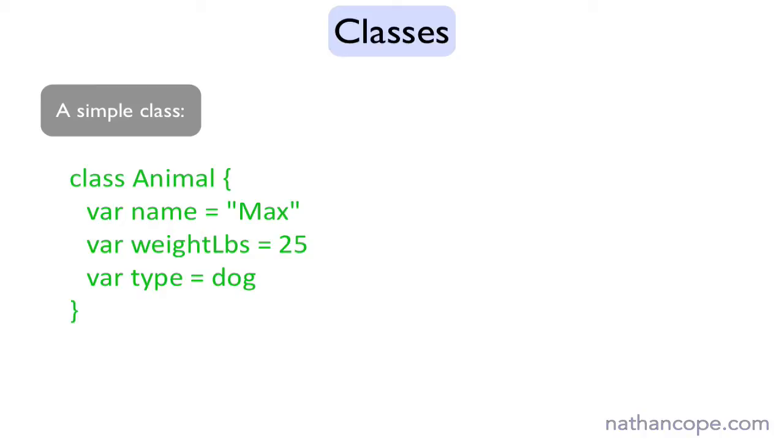We'll take a look at properties at a deeper level in a later lecture, but in short, the properties in this version of our class make up our blueprint or schematic of an animal type. In effect, the class doesn't really do anything on its own.